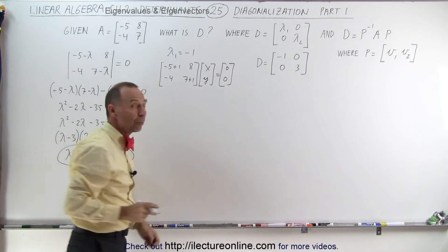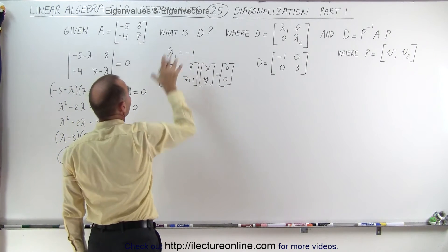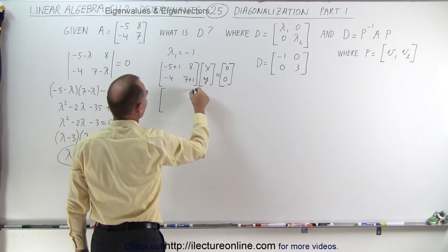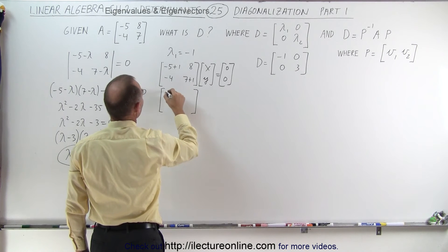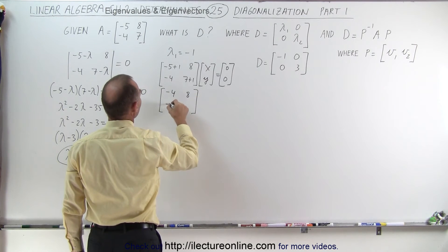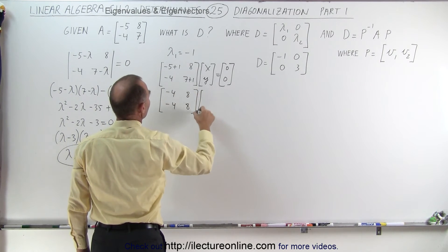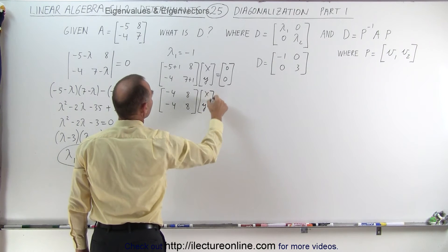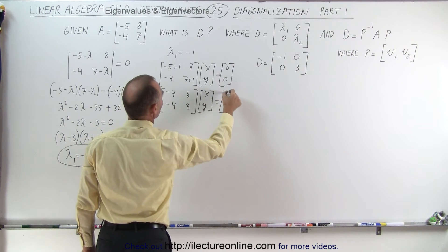That will allow us to find the first eigenvector corresponding to this eigenvalue. This will look as follows: minus 4, 8, minus 4, 8, times x, y, equal 0, 0.